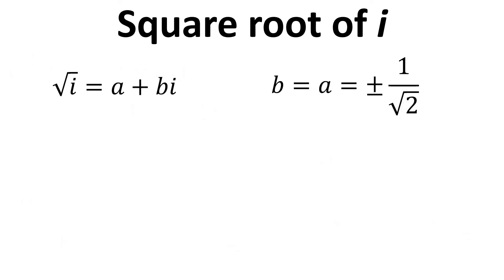So we can now use the original definition that we had for the square root of i as being equal to a plus bi and then also the solutions for a and b. Solution 1 when a equals positive 1 over square root of 2 we end up with the square root of i equaling 1 over root 2 plus i over root 2.